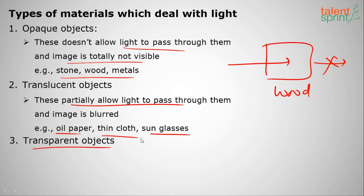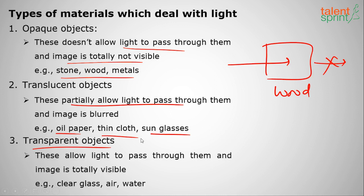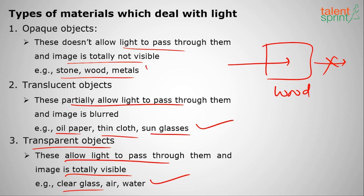Transparent objects completely allow light to pass through them, opposite to opaque, and the image is totally visible and clear. Examples are clear glass, air, and water. Since we cannot see air itself, we can see light and other objects properly through it.